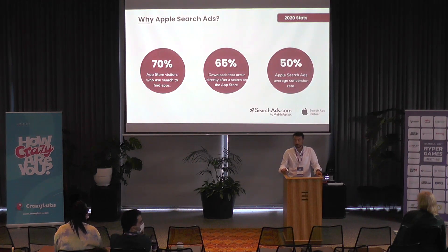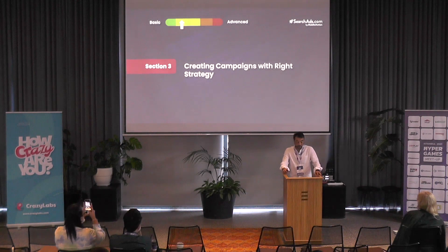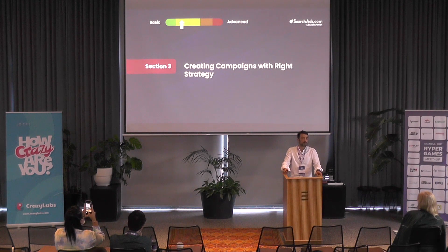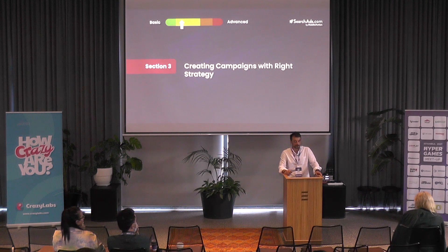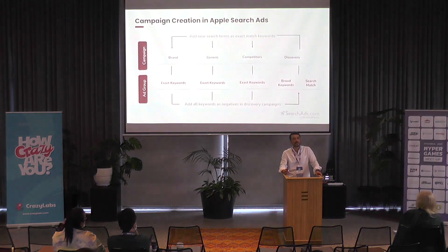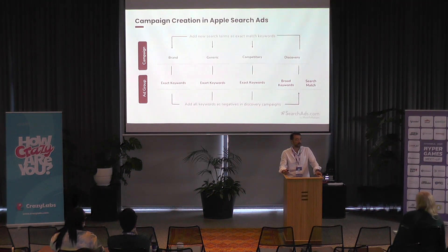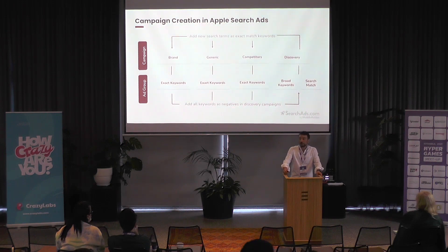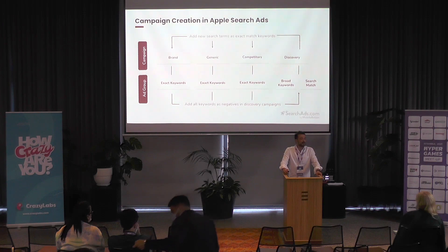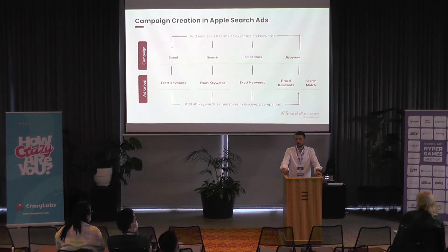How do we succeed on Apple Search Ads? The answer is quite simple: creating campaigns with the right strategy. The strategy is designed around Apple's hierarchy — campaigns, ad groups, keywords, and match types. In search marketing, you target the keywords you want to be seen for, you place a bid, and Apple puts you in an auction. If you win the auction, your ad appears in the first position.